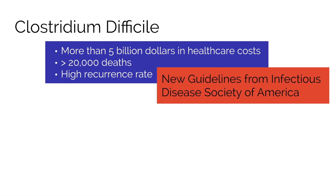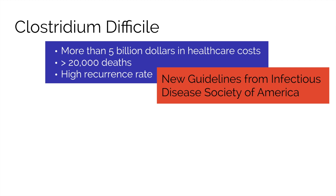Clostridium difficile is a well-known bacteria that has led to more than $5 billion in healthcare costs and more than 20,000 deaths within the United States. As the name conveys, Clostridium difficile, otherwise known as C. diff, can be a difficult bacteria to treat, with up to 30% of people developing a recurrence of their infection. My goal today is to highlight the key points in the new guidelines released by the Infectious Disease Society of America, so we can get a better handle on this devastating infection.